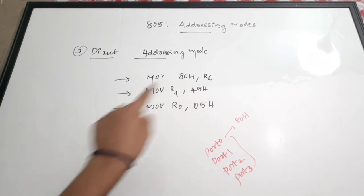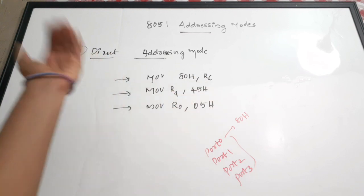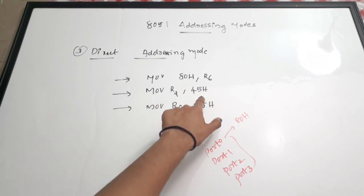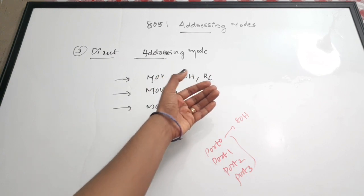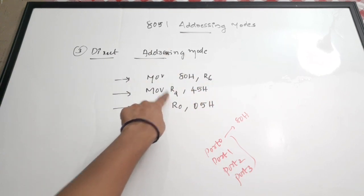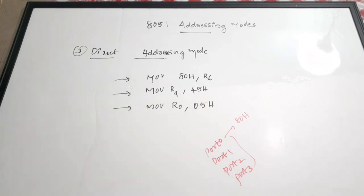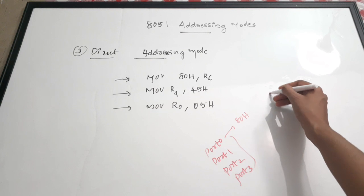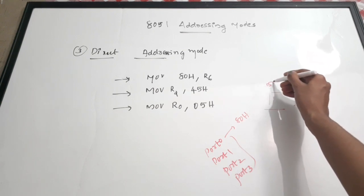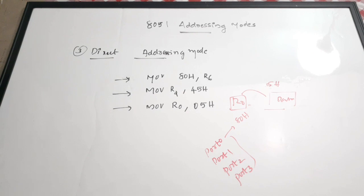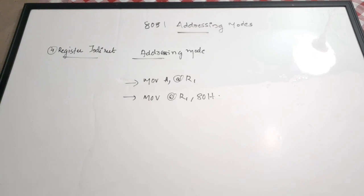Since these are address locations, there is no hash symbol associated with the hexadecimal values. MOV R2, 45h means from address location 45h we take the data and pass it to register R2. Similarly, MOV R0, 05h takes data from address location 05h and passes it to R0. That is direct addressing mode — we directly give the address locations from which we take the data.